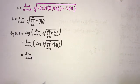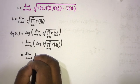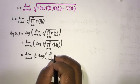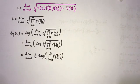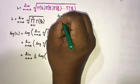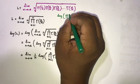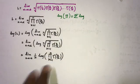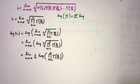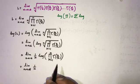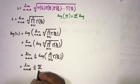According to the property of natural log, the nth root becomes a factor of 1/n in front of the log. So we have: limit as n approaches infinity of (1/n) times the natural log of the product from k equals 1 to n of gamma(k/n). Since the log of a product equals the sum of logs, this becomes (1/n) times the sum from k equals 1 to n of natural log of gamma(k/n).